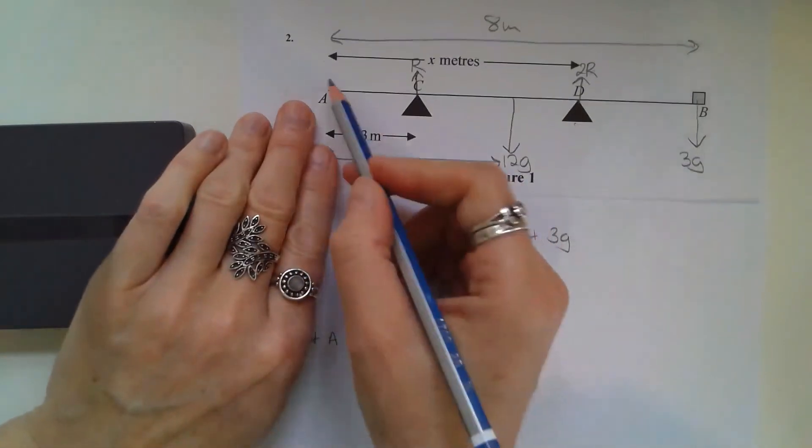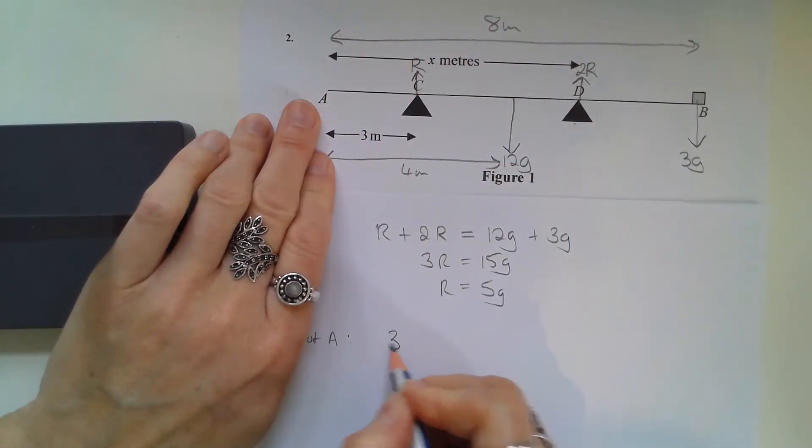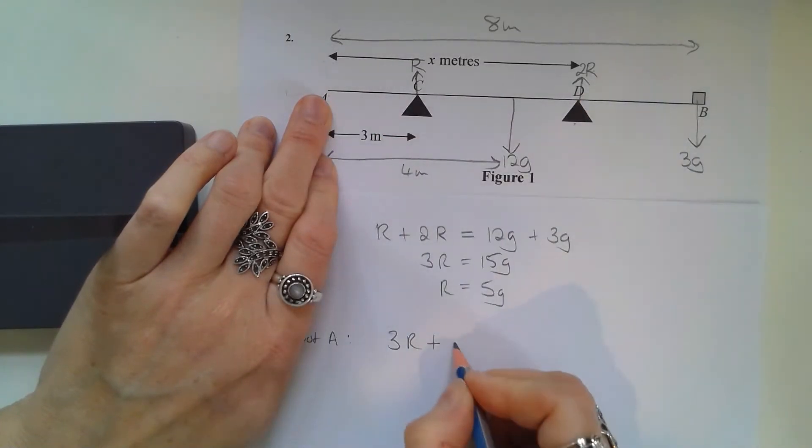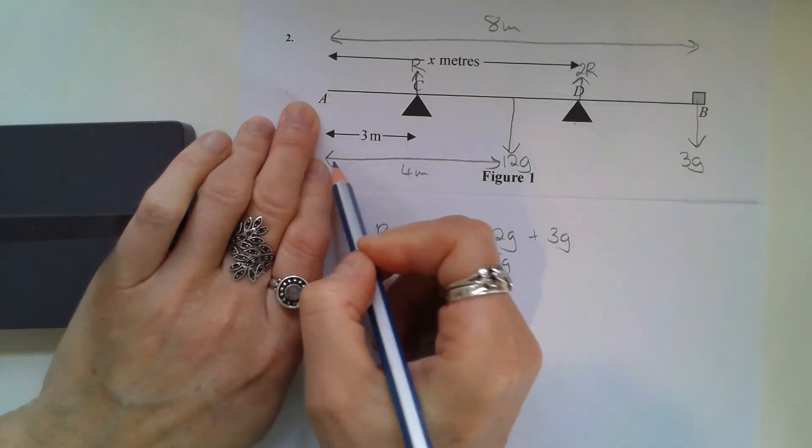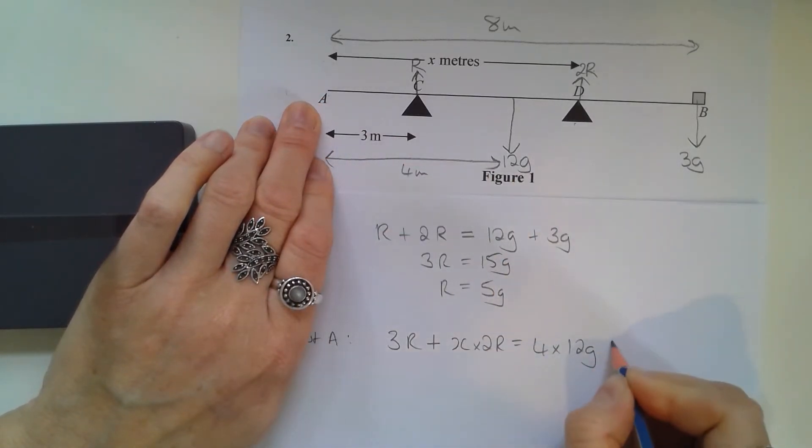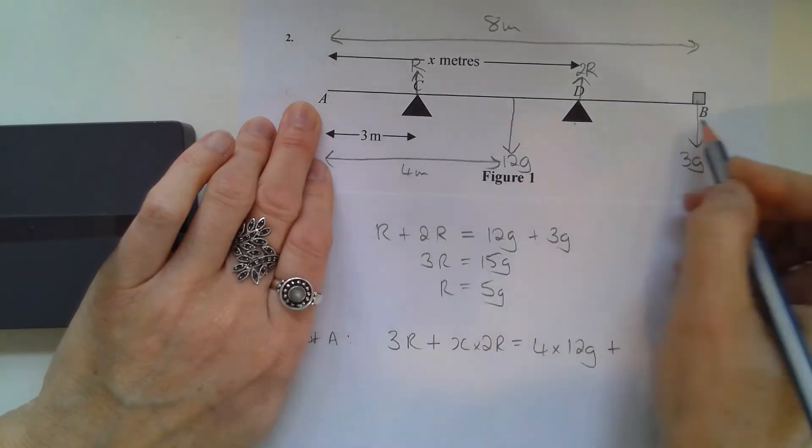So I have 3 times R plus x times 2R equals 4 times 12g plus 8 times 3g.